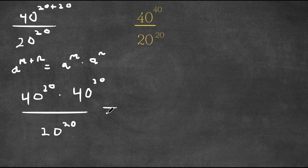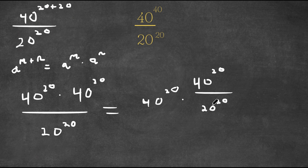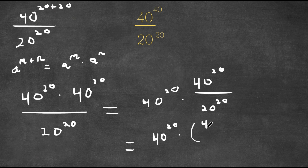This is the same thing as 40 to the power of 20 times 40 to the power of 20 over 20 to the power of 20. And this is equal to 40 to the power of 20 times 40 over 20, to the power of 20.